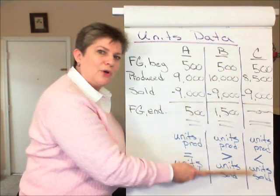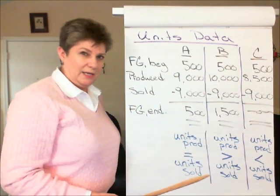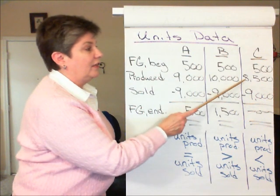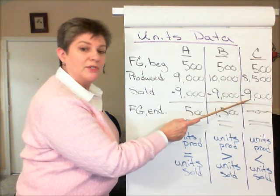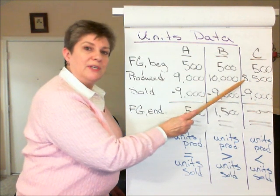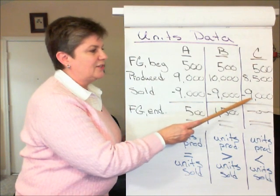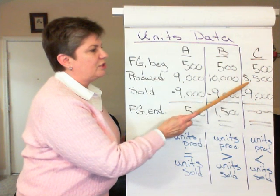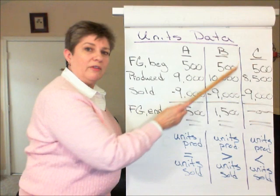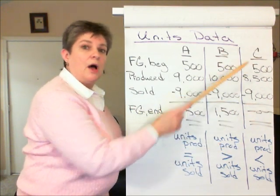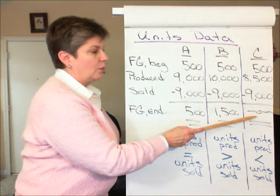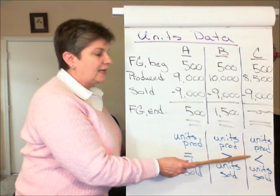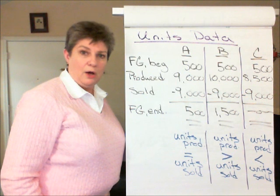We won't actually work through the numbers on Scenario C, but let's look at it. Again, the difference across the three examples is in units produced relative to units sold. In Scenario C, we're producing only 8,500 units but selling the same 9,000 as in the other two scenarios. Since we produced fewer units than were sold, we used up part of the beginning inventory — in fact, all of it — so ending inventory is zero. Scenario C: units produced is less than units sold.